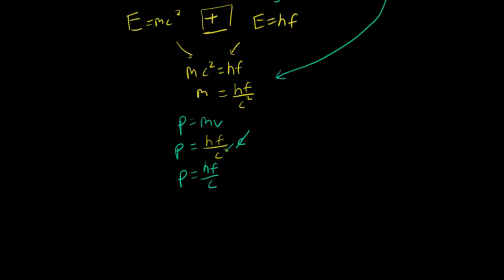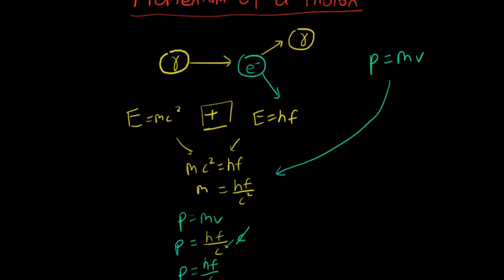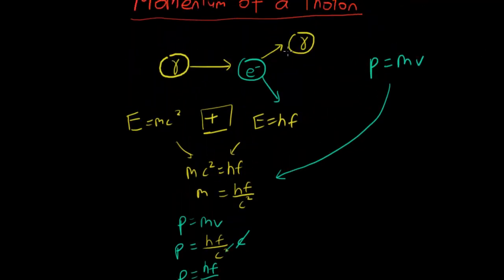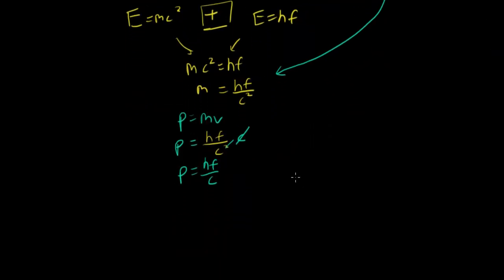How about if you want to relate this momentum to the photon's wavelength? Because we know the Compton effect dealt with the wavelengths before and after the collision. The universal wave equation for light is c equals lambda f. The speed of light equals the wavelength times its frequency. We can rearrange this to find that lambda equals c over f.